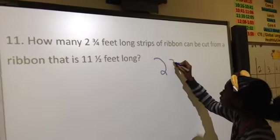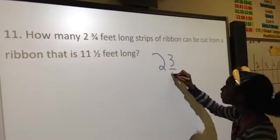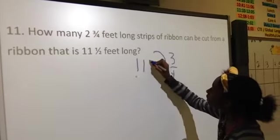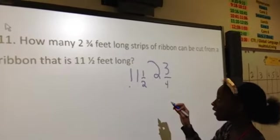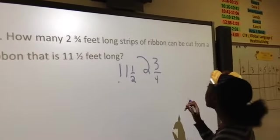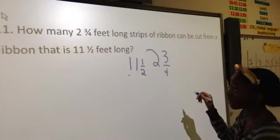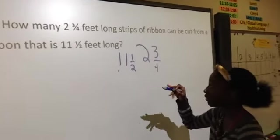The problem is 2 and 3 fourths. So the problem is 11 and a half divided by 2 and 3 fourths, because it's asking how many strips of ribbon can be cut from 11 and a half. So how many times can 2 and 3 fourths go into 11 and a half?